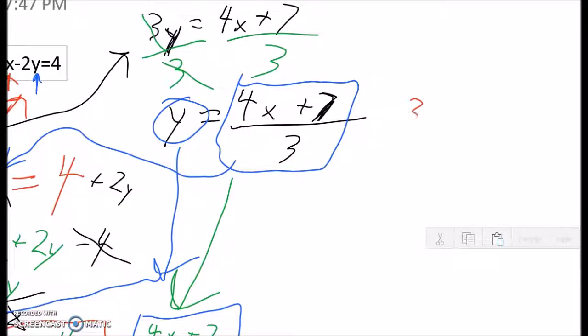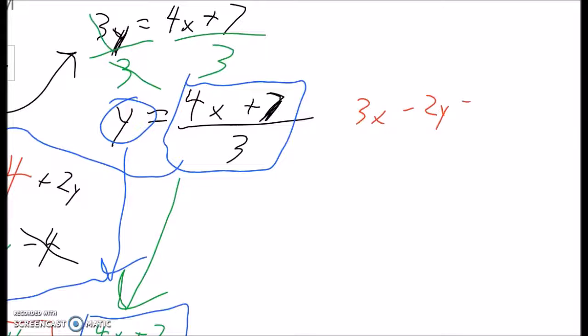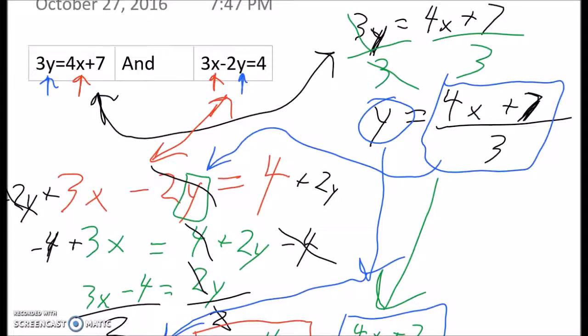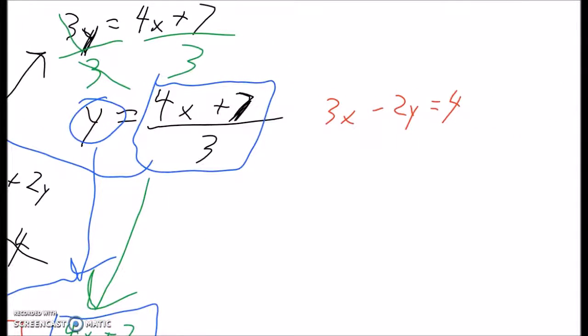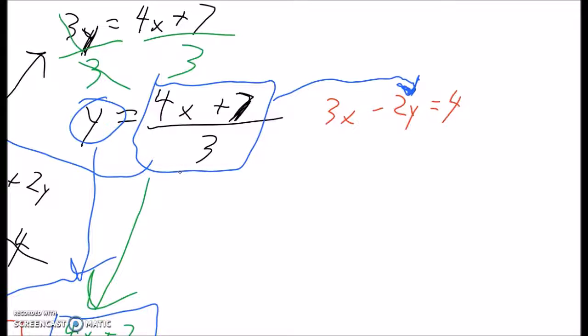So, I'm going to write our equation here. 3x minus 2y equals 4. So that's the same as our red. And I'm going to write this new way of doing it in blue. This is not what I prefer, but some people like it better this way. So, we know that y equals 4x plus 7 over 3. So if that's true, then we can substitute that in instead of this y. So, what we could do is we can write 3x minus 2 multiplied by the whole expression in this big square. By the whole expression in this square. Equals 4. Do you see how that works?